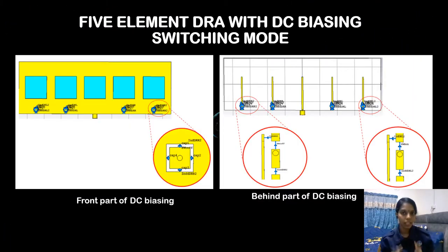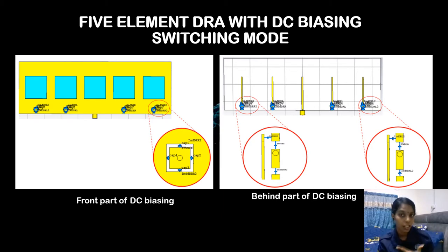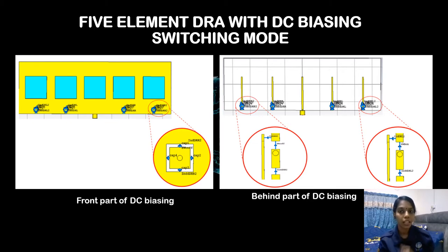Next, these are the final prototypes which use DC biased switching with capacitors, inductors, and resistors. The capacitors are used as DC current blocks, while the inductors are used as RF chokes.